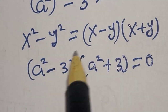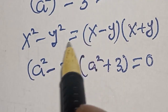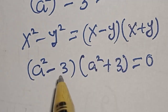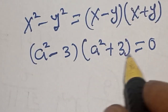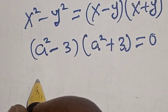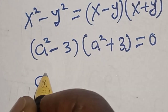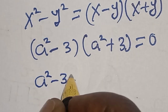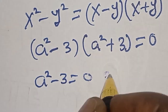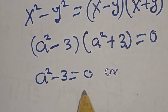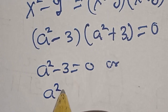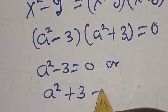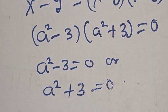Because s here is a squared and y is 3, we have two cases. That is: a squared minus 3 is equal to 0, or a squared plus 3 is equal to 0.